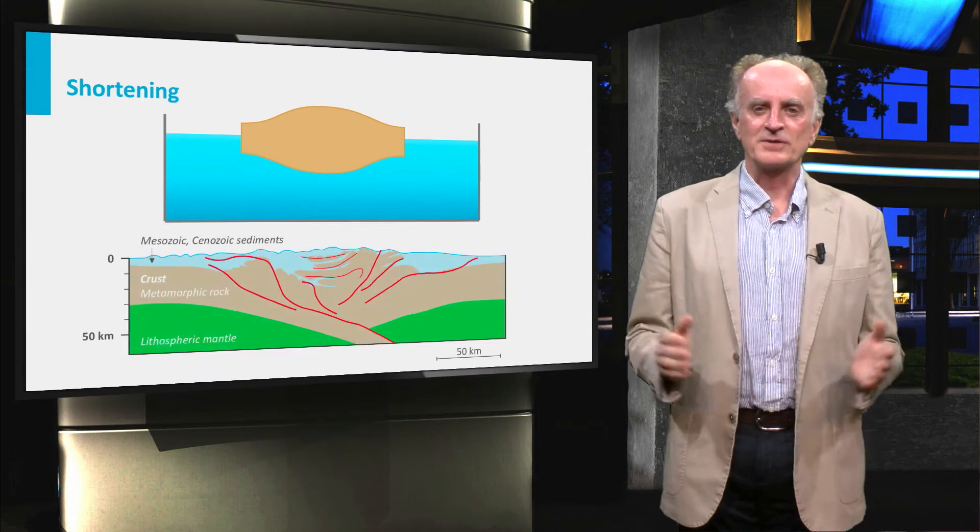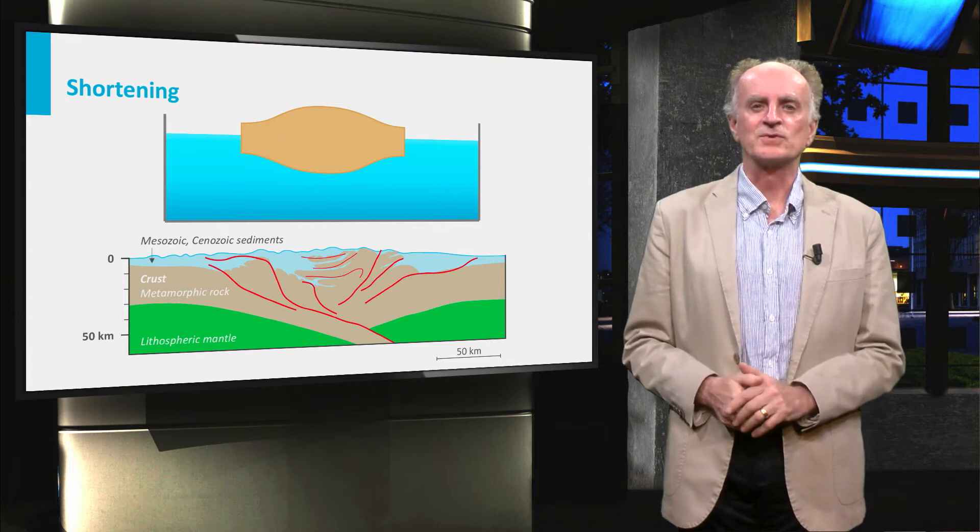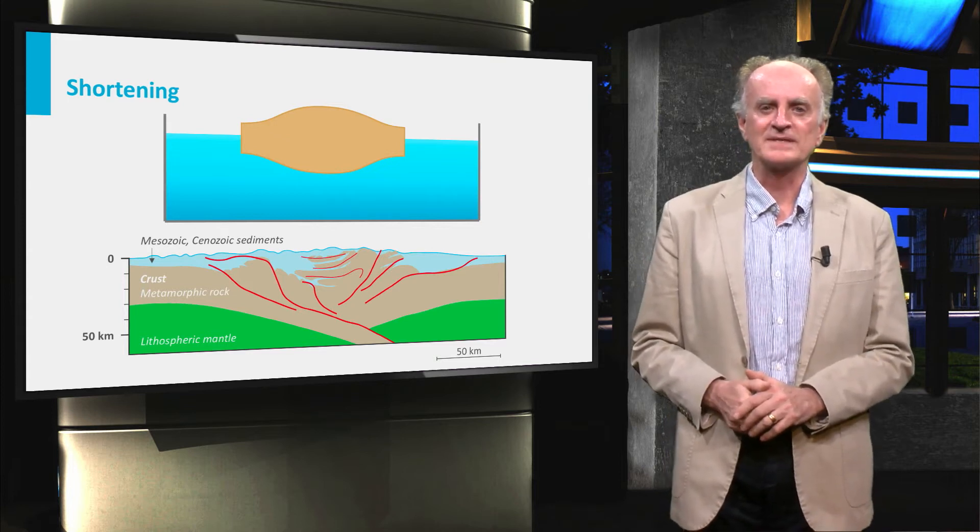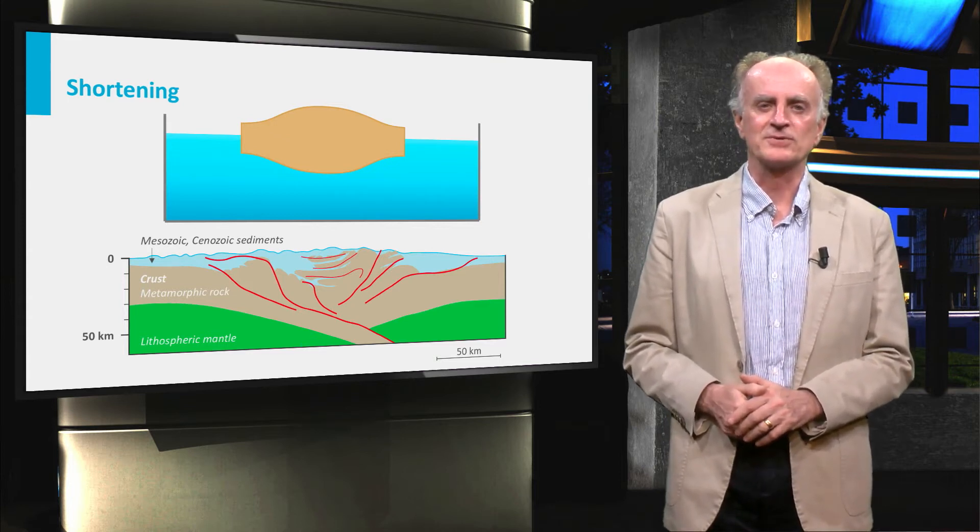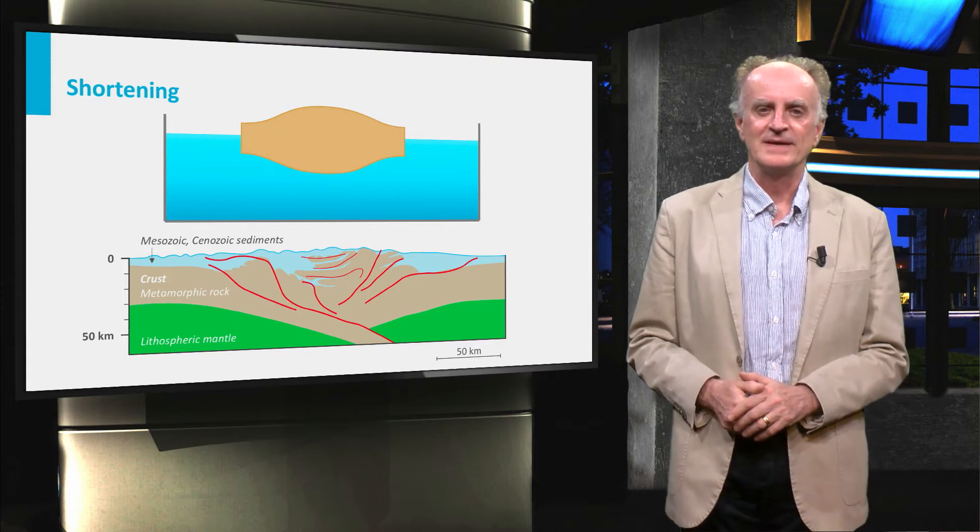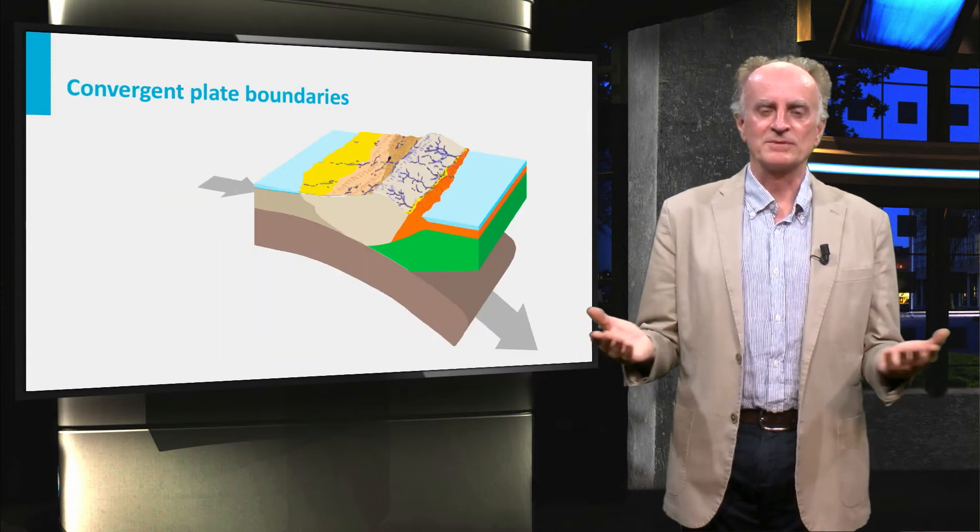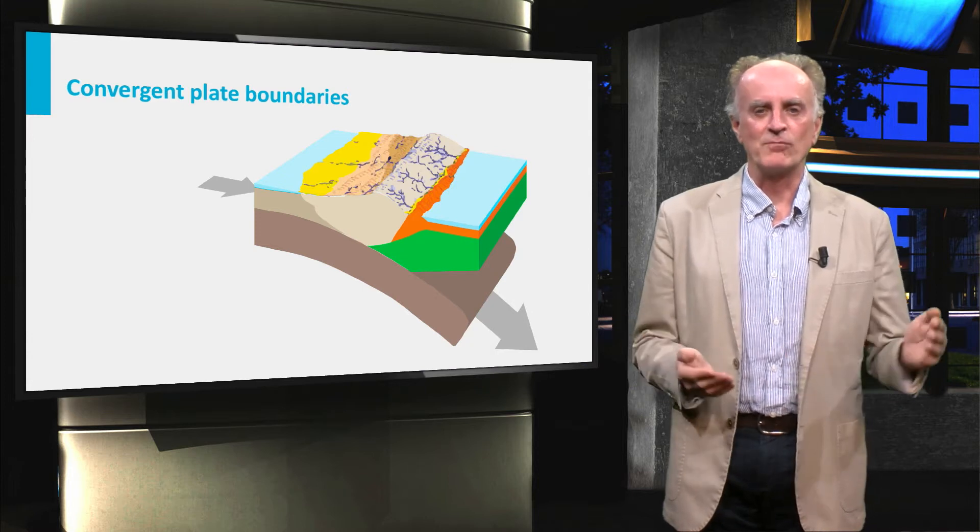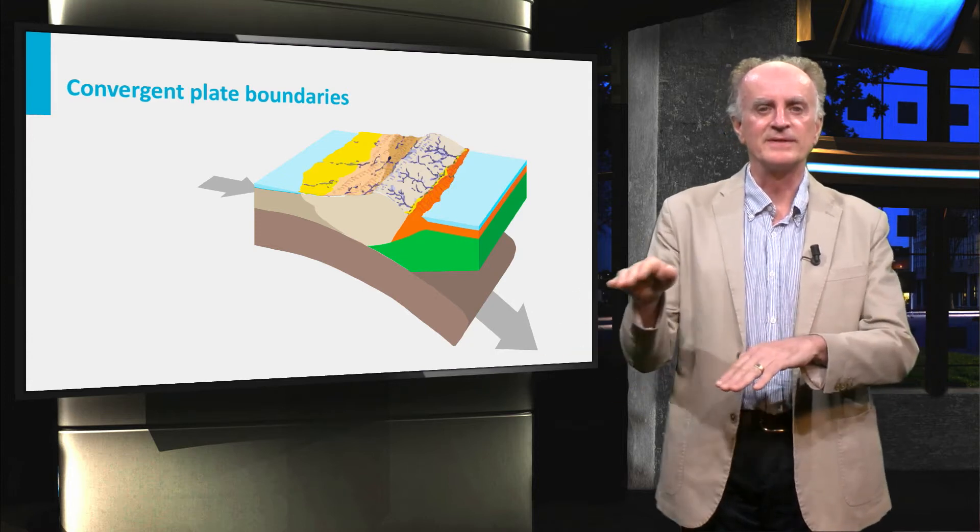The hypothesis that topographic creation is associated with shortening is proven by the thrust and by reverse folds in the external parts of the orogen. Major shortening takes place at convergent plate boundaries, typically with one plate subducting underneath the other.